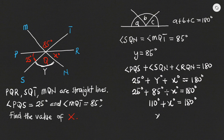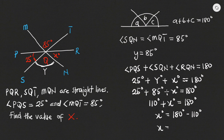To find X, I send 110 to the other side of the equals sign, where it becomes negative. So X equals 180 minus 110, which gives me 70 degrees. Therefore, the value of X equals 70 degrees.